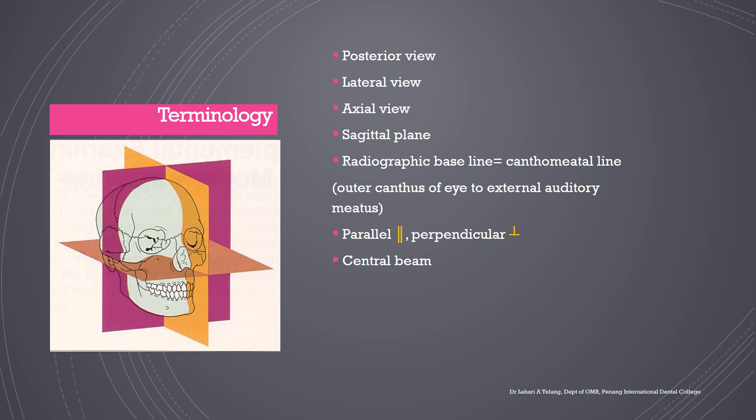When we begin, it is important to understand a few terms: posterior view, lateral view, axial view, and sagittal plane. The posterior view has x-rays coming from the posterior of the skull towards the anterior. Lateral means x-rays coming from the lateral side of the head. Axial view or axial plane is the cross-sectional plane cutting through the axial section. Sagittal is the plane cutting through the skull midway into half. The radiographic baseline is the canthomeatal line from the outer canthus of the eye to the external auditory meatus. The terms parallel, perpendicular, and central beam — the center of the x-ray source — will also be used.